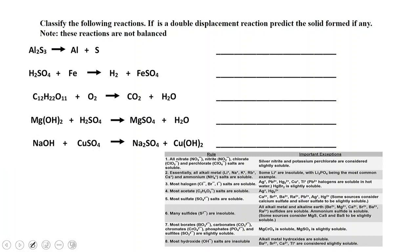Here we have a carbon-containing compound with mainly carbons and hydrogens, plus oxygen, and we end up with carbon dioxide and water. Anytime you see a carbon-containing compound plus oxygen producing carbon dioxide and water, we automatically have a combustion reaction.